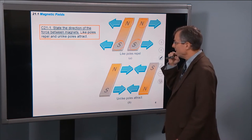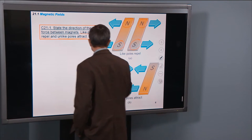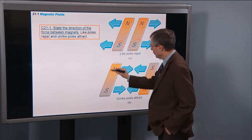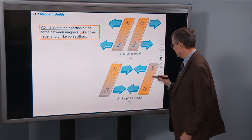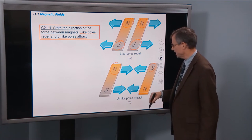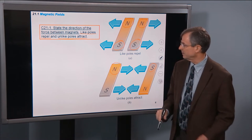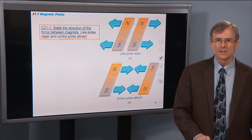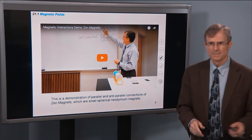Unlike poles attract. If we have a north pole and flip one of the magnets backwards, the north pole will attract the south pole, and vice versa for the south and the north. Something you've seen before — you've played with magnets when you were kids.